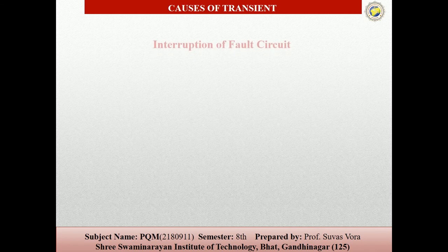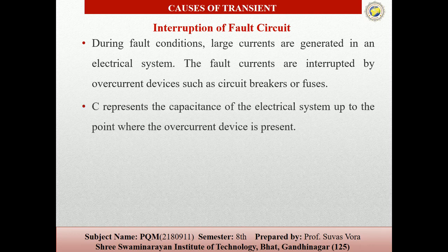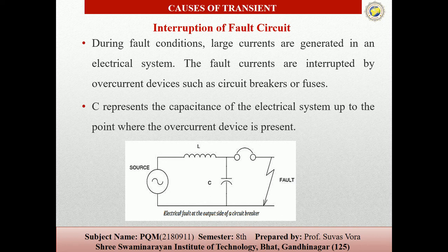For interruptions of fault circuits — when a device is faulting, large currents are produced in the system and the fault in the circuit can be rectified using circuit breakers. Capacitors exist in circuits of electrical systems set up to the point where the fault current device is used, so we can use these capacitors. The interruptions produce overvoltage transients in the device, and the voltage produced depends on the amount of fault current and the speed with which the fault is cleared.